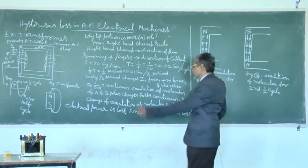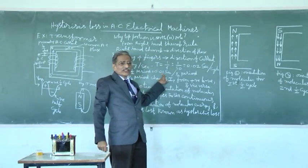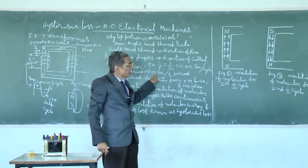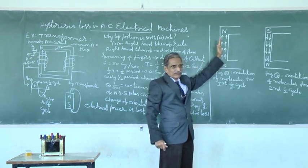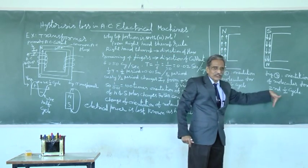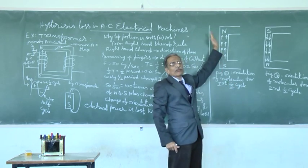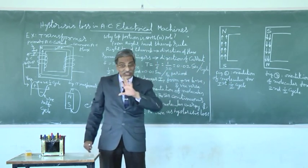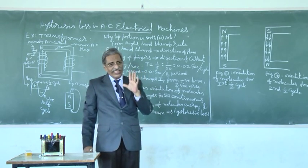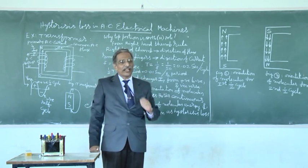Means for every 0.01 seconds orientation changes. Molecules are like this. Again molecules are downwards. Again molecules are upwards. Like that hundred times per second the molecules are changing in their direction. So, this is the entire orientation or direction.